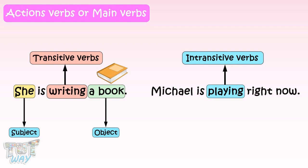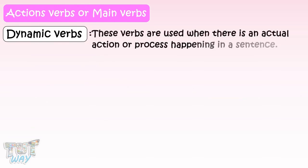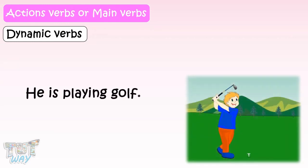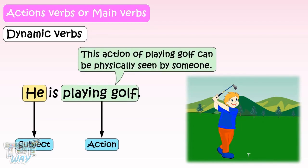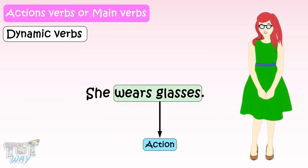The next category of verbs is dynamic verbs. These verbs are used when there is an actual action or process happening in a sentence. For example, 'He is playing golf.' The act of playing golf is an action being done by the subject, and this action can be physically seen by someone. Another example: 'She wears glasses.' The act of wearing glasses by the subject can also be physically seen.